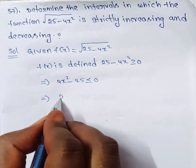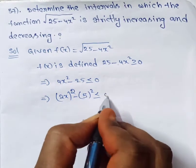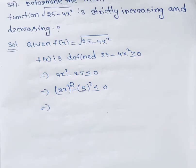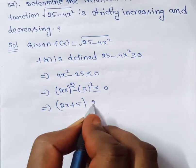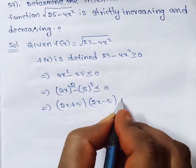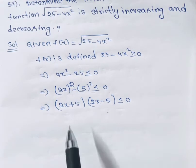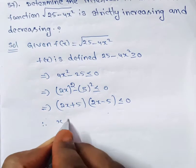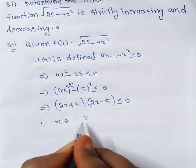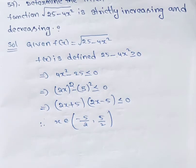We can write this as (2x)² − 5² ≤ 0, which factors using a² − b² = (a+b)(a−b) as (2x + 5)(2x − 5) ≤ 0. This gives critical values x = −5/2 and x = 5/2. Therefore, x belongs to [−5/2, 5/2], which is the domain.